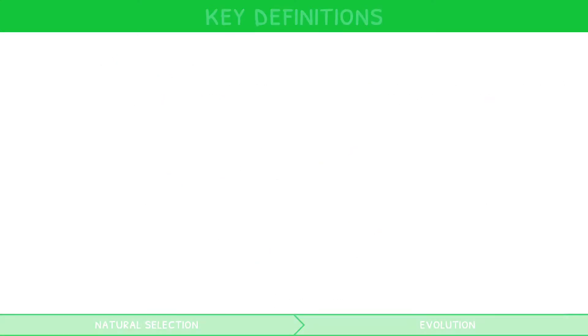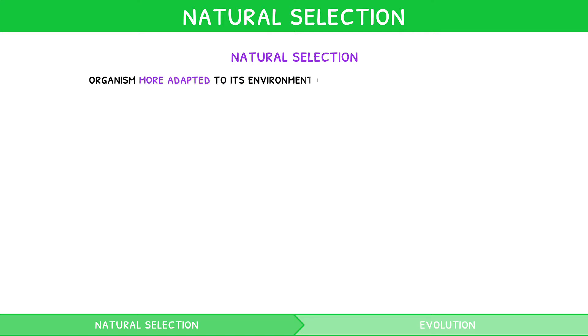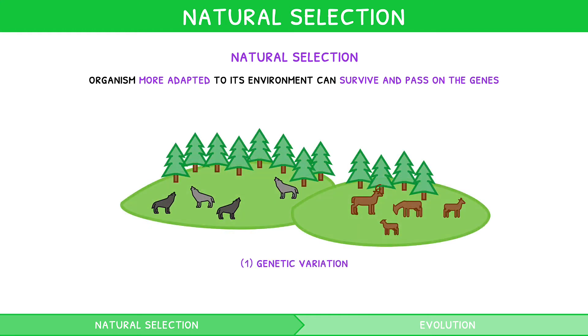So, what is natural selection? Natural selection is the process by which an organism that is more adapted to its environment can survive, and so can pass on the genes for its adaptation to its offspring. The IB expects you to recall the sequence of events that leads to natural selection in detail. First, there is genetic variation within a population, and so some organisms are more adapted than others.